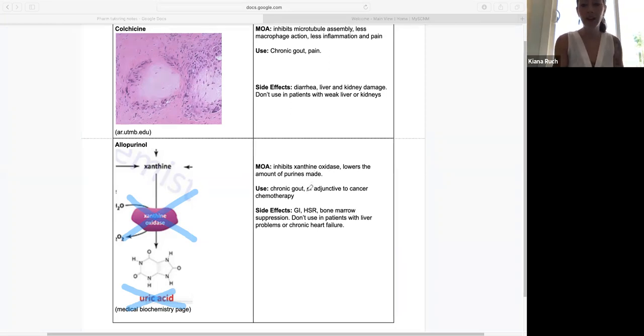This can be used in chronic gout and as adjunctive therapy to chemotherapy. An important side effect to know is bone marrow suppression, also called pancytopenia. This means the blood cells are going to be low—white blood cells, red blood cells, and platelets will all be low. Patients are at risk for infection, bleeding, and other serious complications as a side effect of allopurinol.